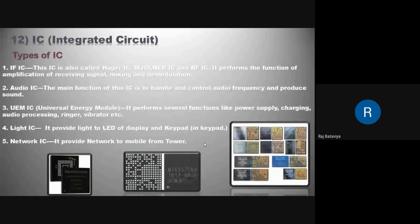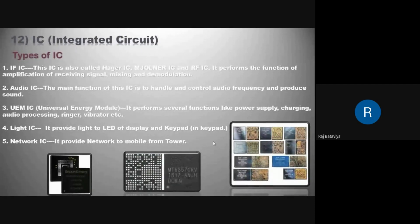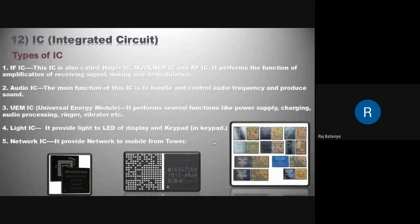The second type is the Audio IC — its main function is to handle and control audio frequency and produce sound. The UMA IC, or Universal Energy Module, performs several functions like power supply, charging, audio processing, ringer, and vibrator.